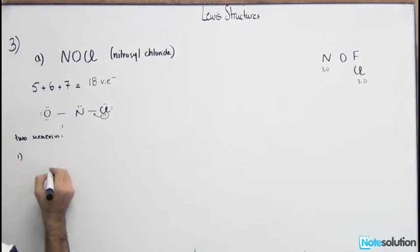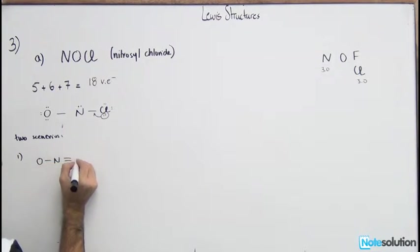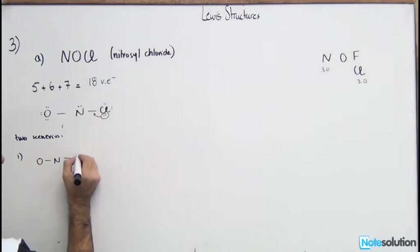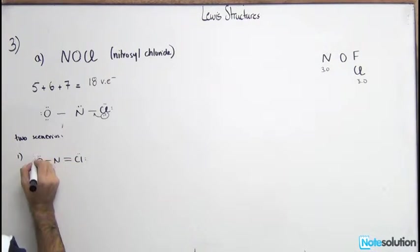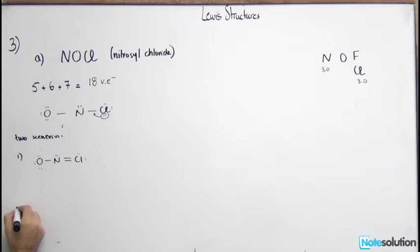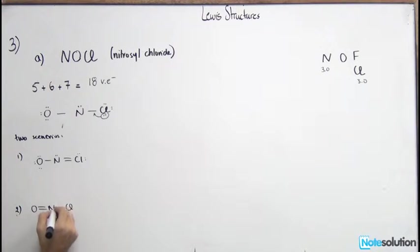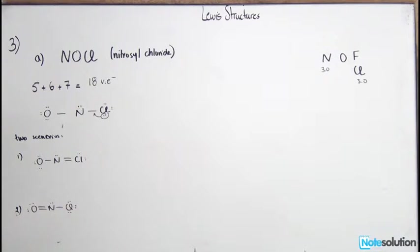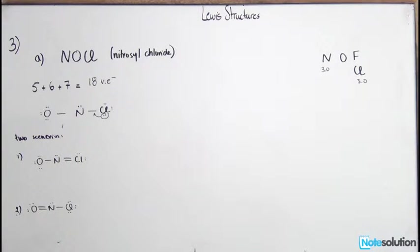So we have two scenarios for N in the middle — one with a double bond between N and Cl, and one with a double bond between N and O. Let's calculate the formal charges for each.